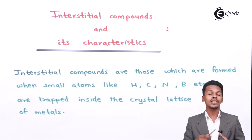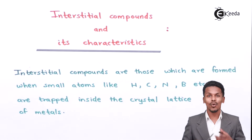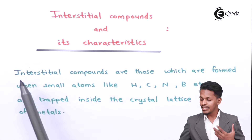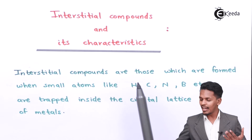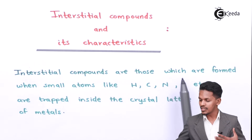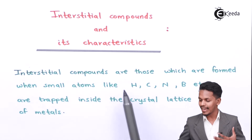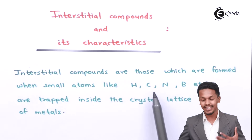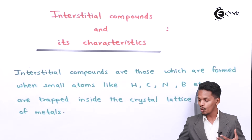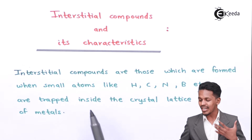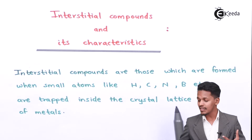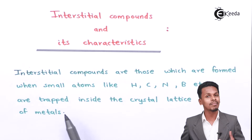Interstitial compounds are those compounds which are formed when small atoms like hydrogen, carbon, nitrogen, boron etc. are trapped inside the crystal lattice of metals.